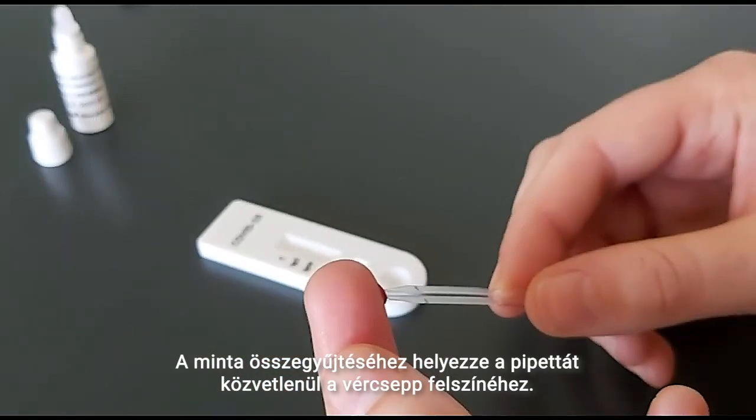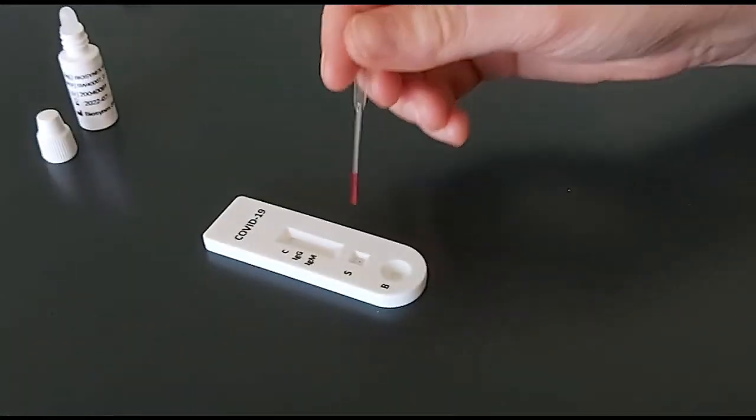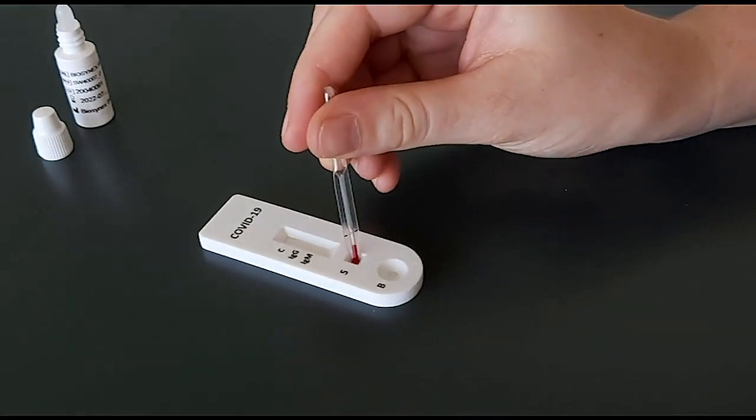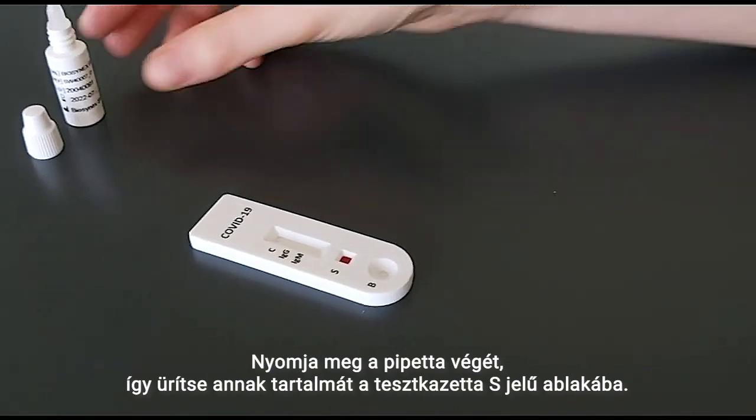In order to collect the sample, take the micropipette and place it on the surface of the drop of blood. Deposit the sample onto the cassette into the sample well labeled by S.